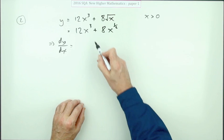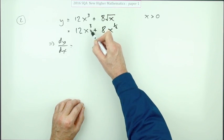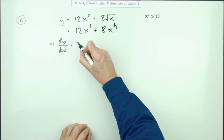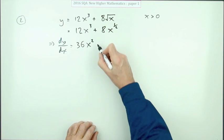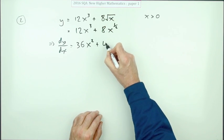It's a simple matter of multiply by the power, take one off the power. Three times twelve is 36, take one off of three, it drops to two. Multiply by the power a half - half of eight is four, take one off the power one a half.